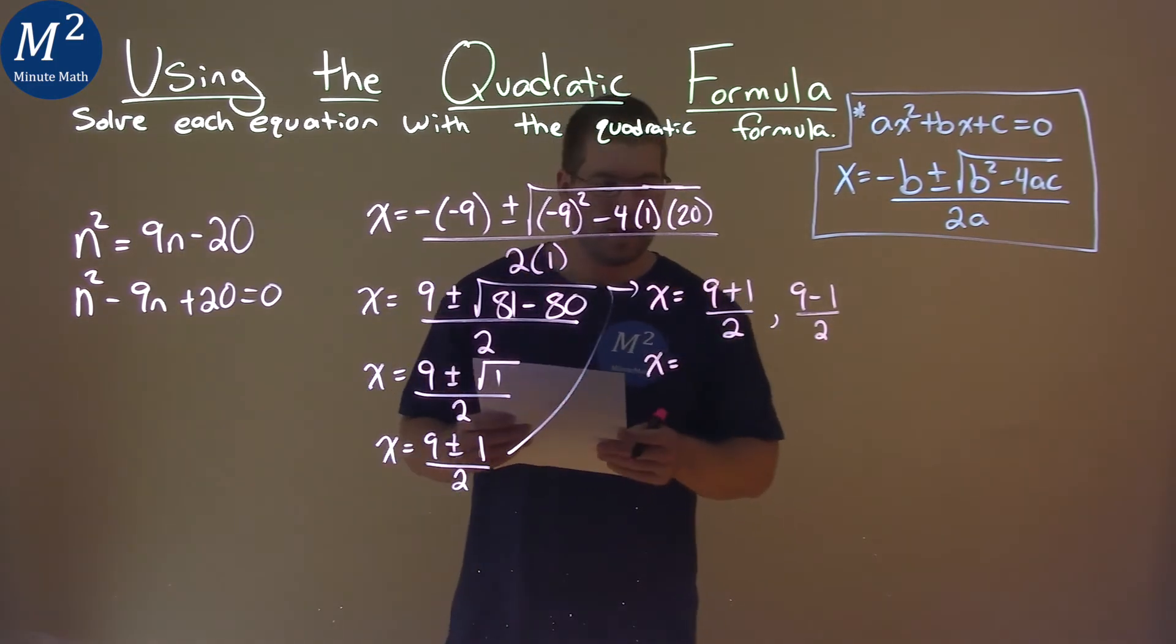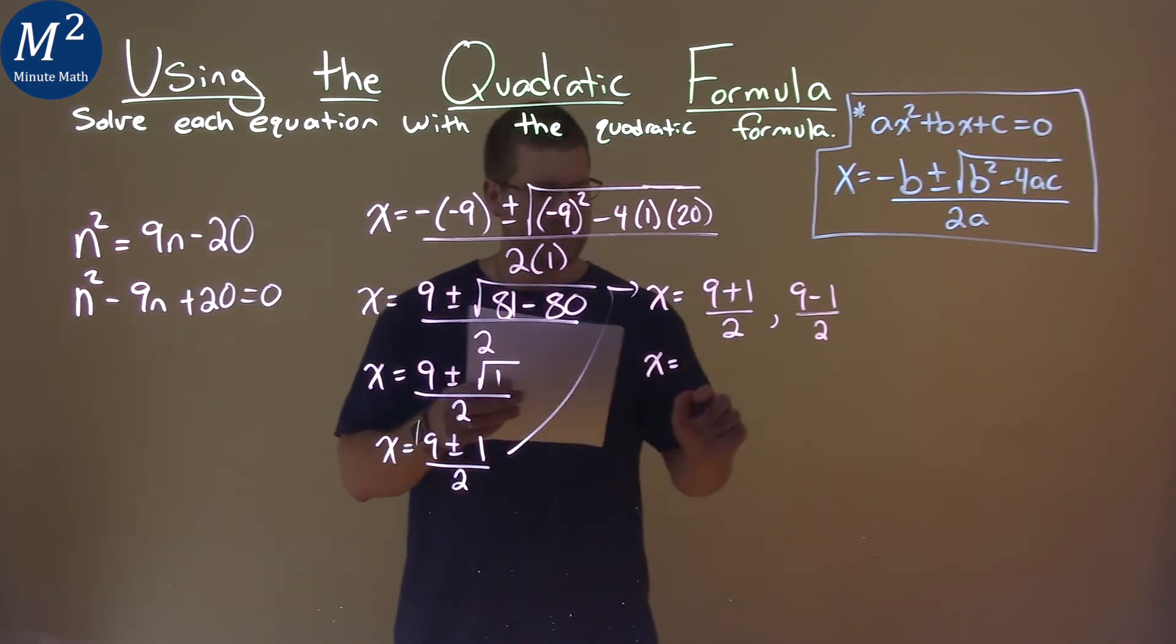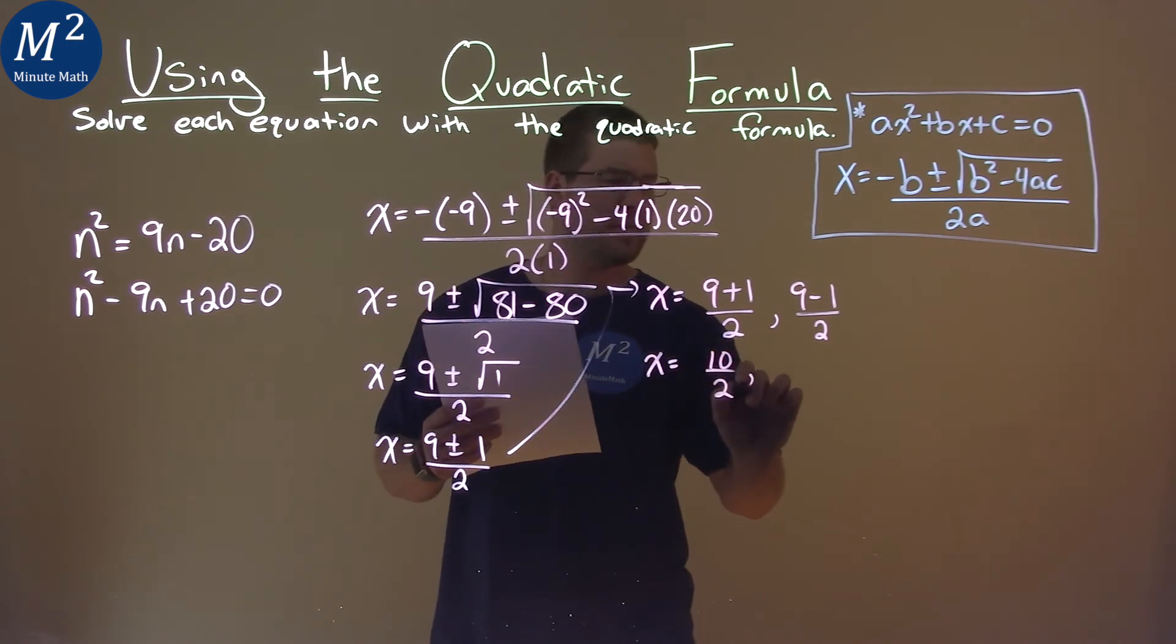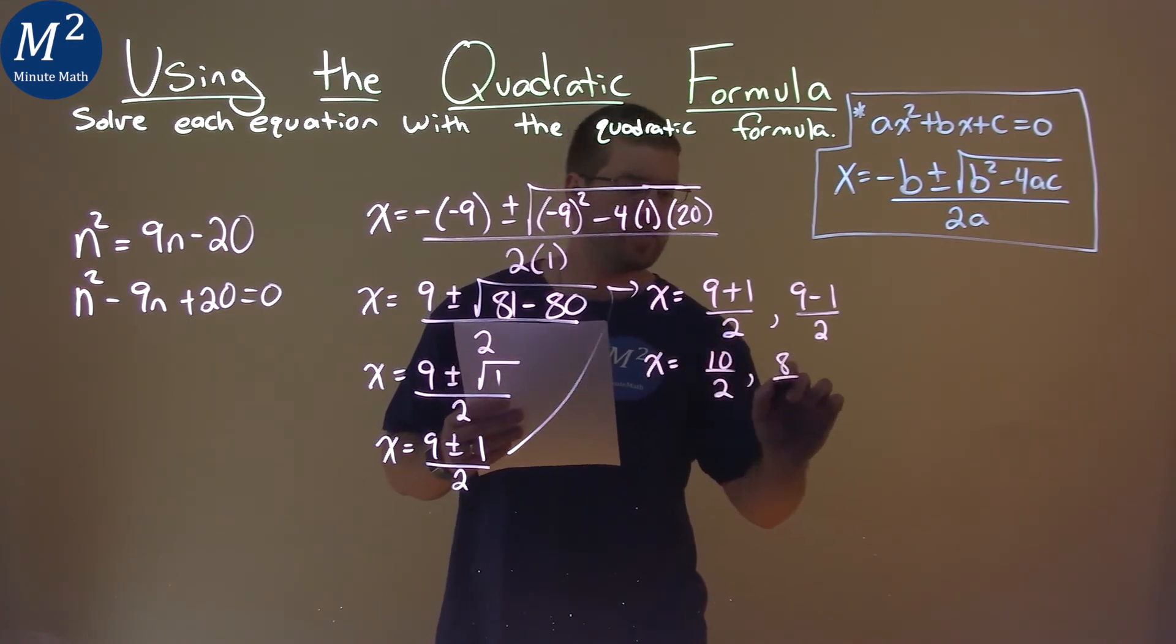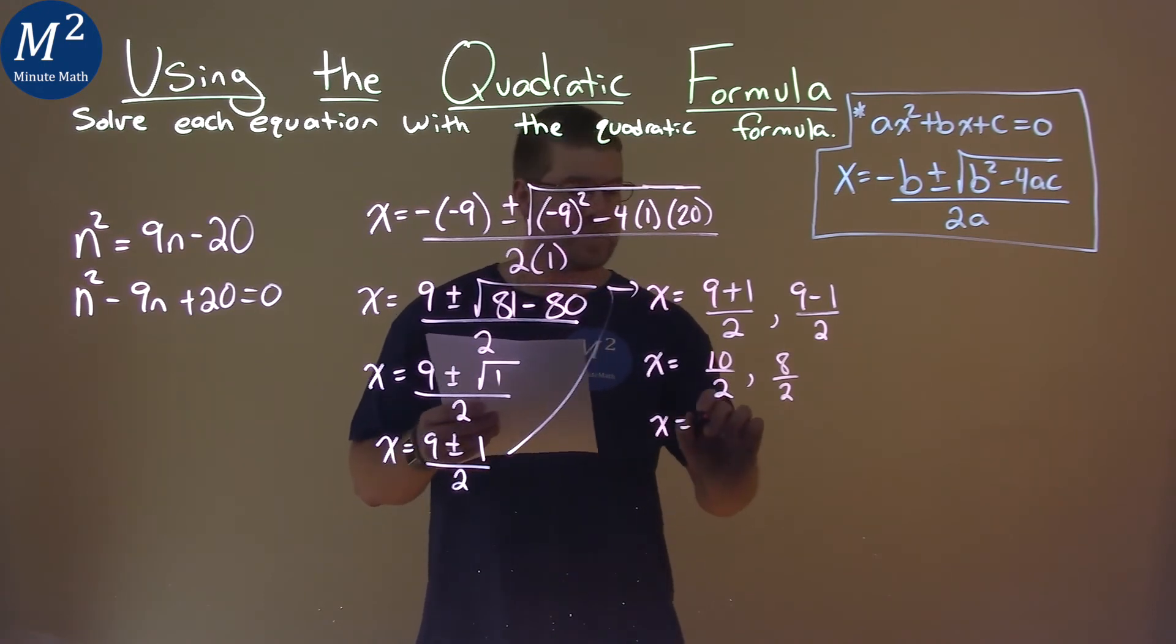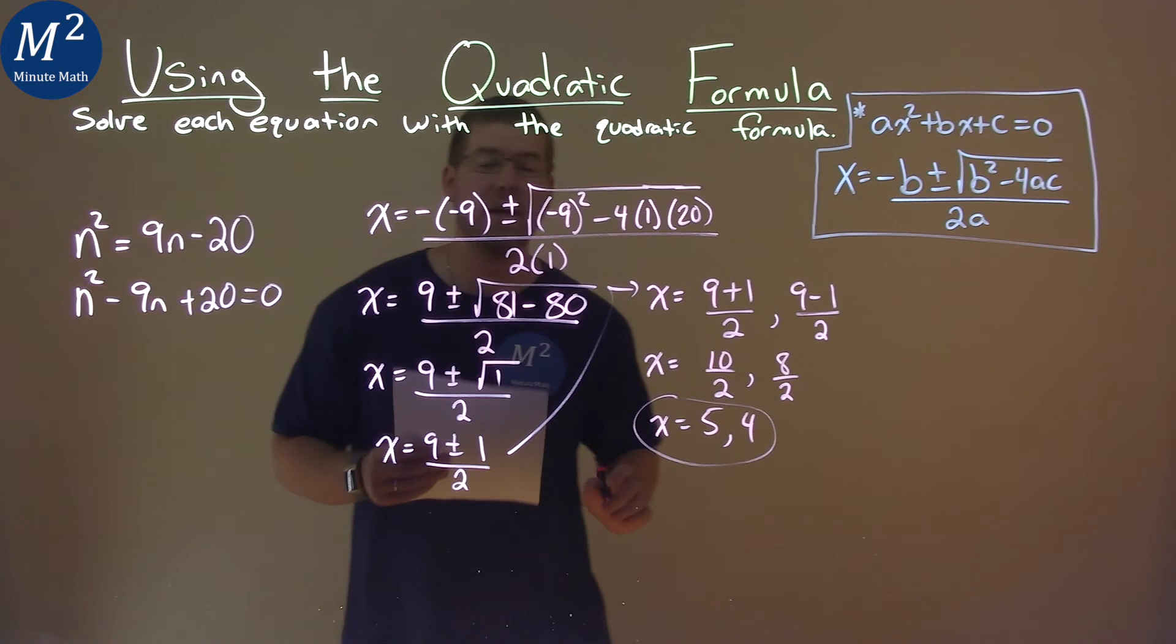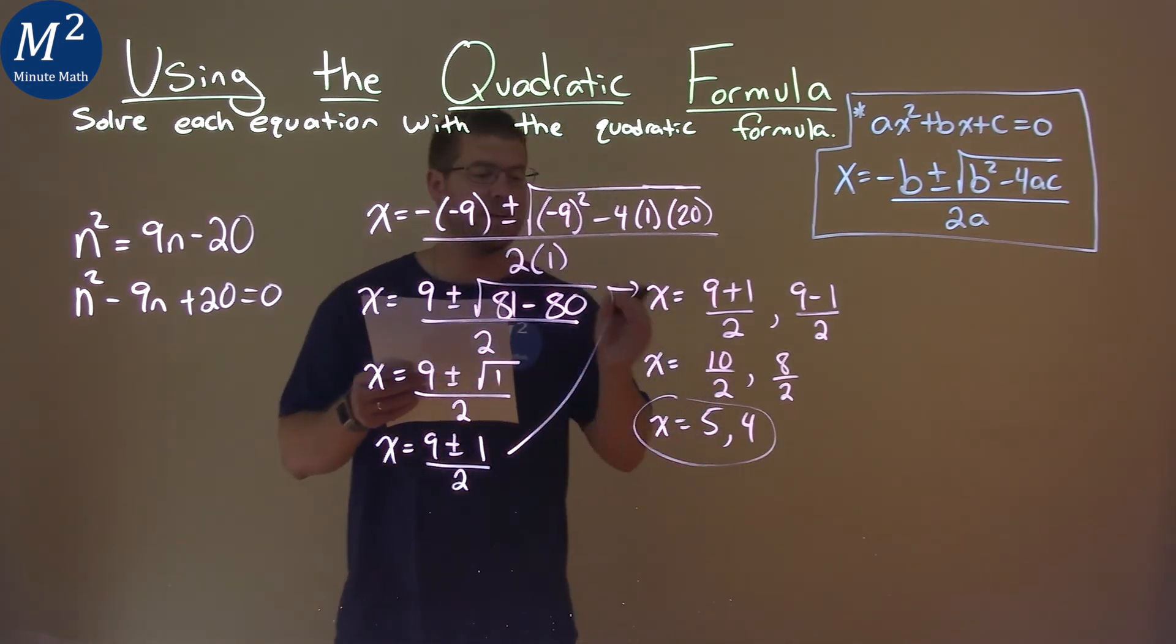Keep on going. 9 plus 1 comes out to be 10 over 2, and then 9 minus 1 is 8 over 2. Well, 10 divided by 2 is 5, and 8 divided by 2 is 4, and so our final answer here is x equals 5 and 4.